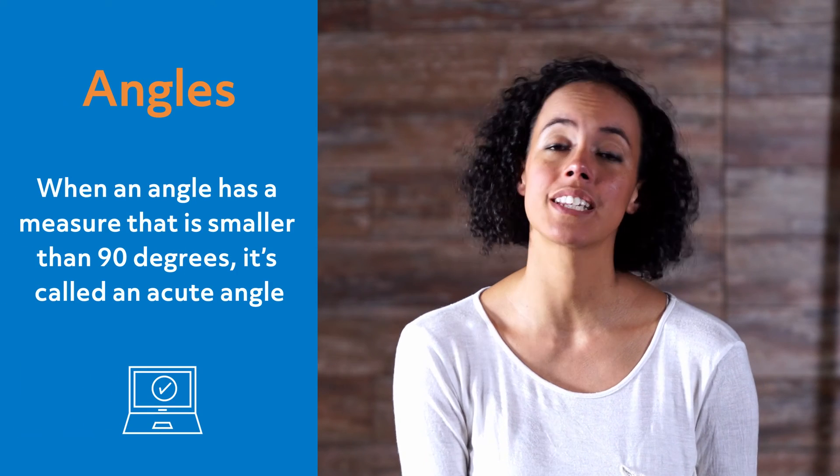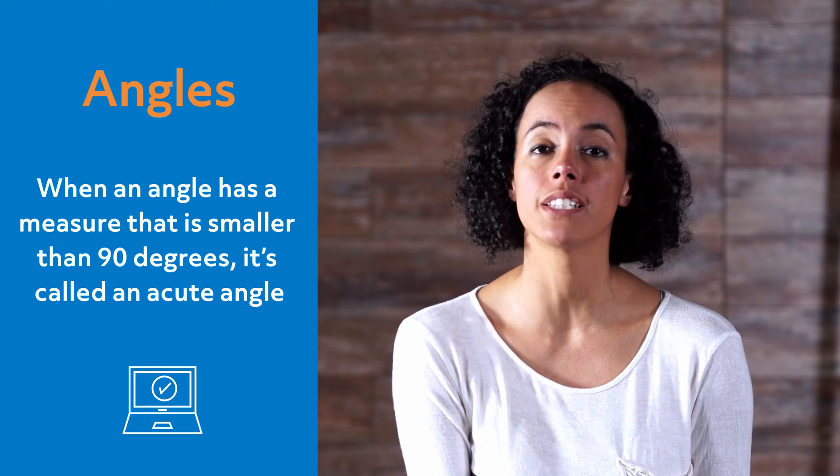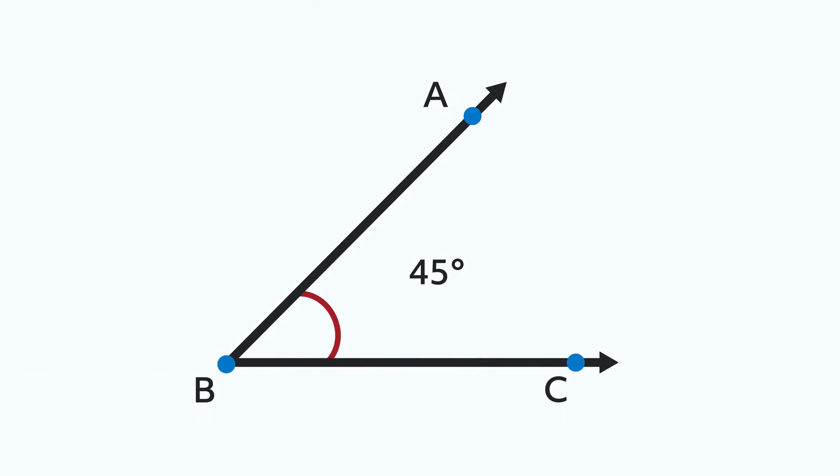When an angle has a measure that is smaller than 90 degrees, it's called an acute angle. Our original angle would be part of an acute triangle, since it measures 45 degrees, which is less than 90.